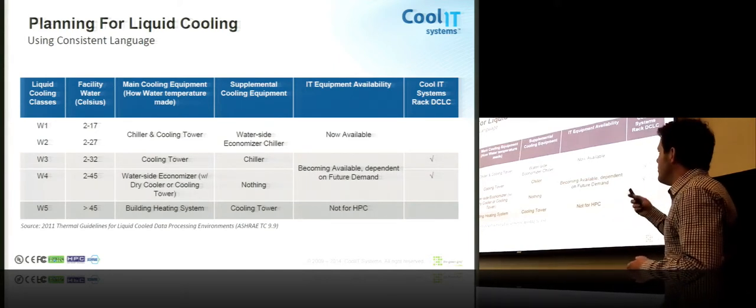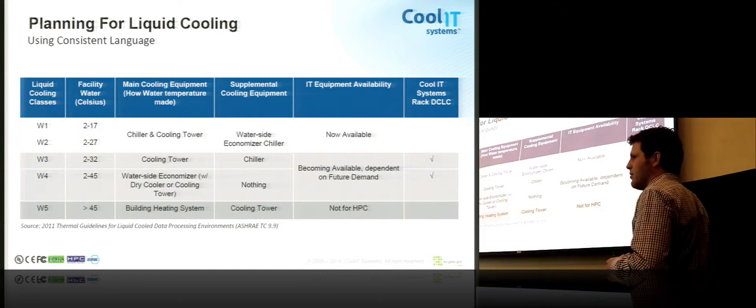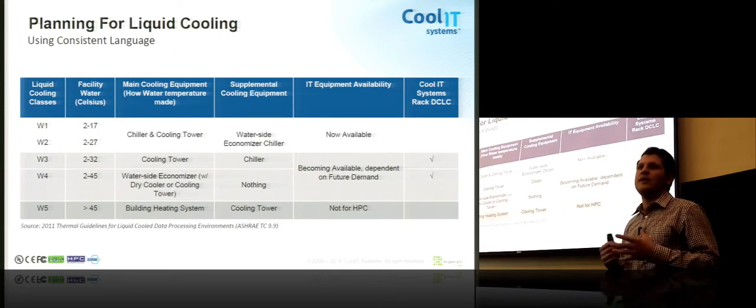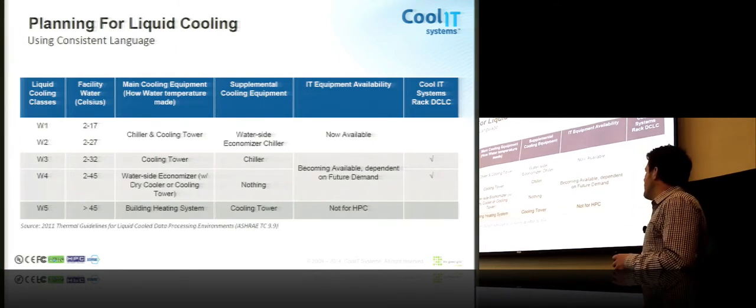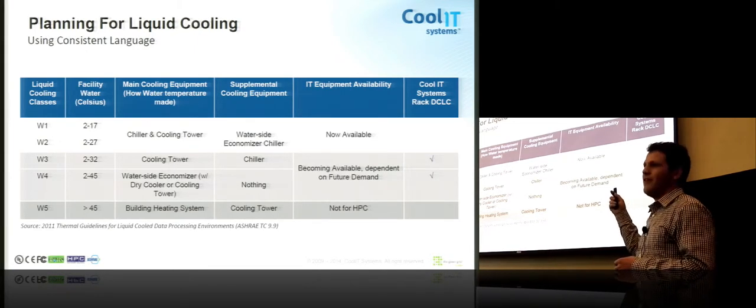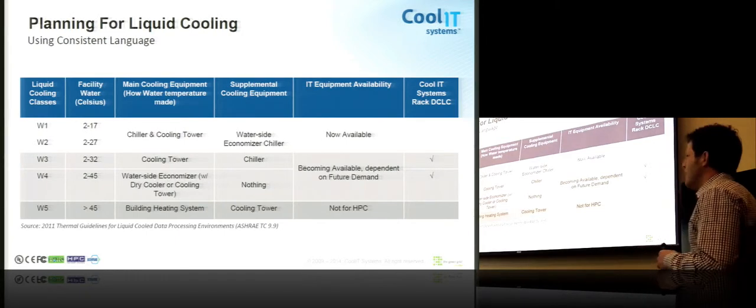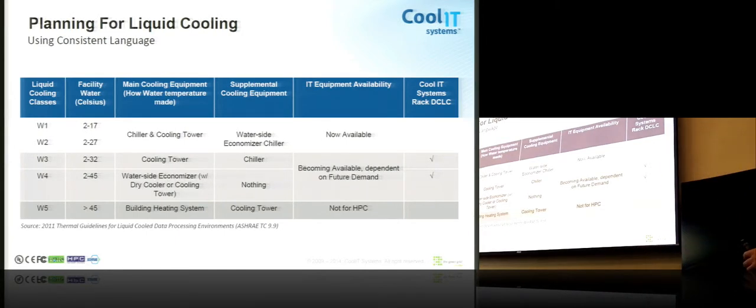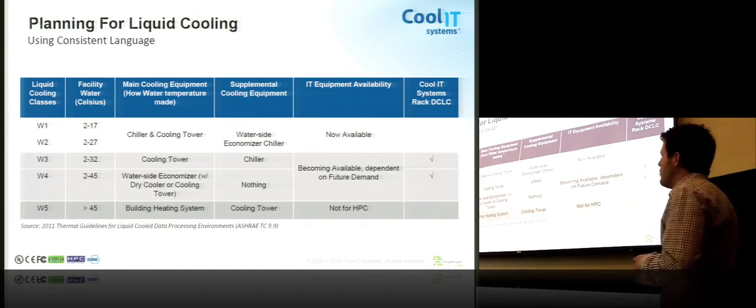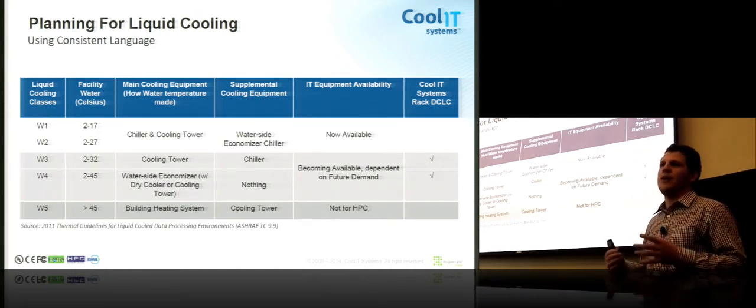More often though, W2 water is produced by a cooling tower with a chiller assist. W3, W4 water is where it really gets interesting and where we see quite a bit of savings for the data center. At W3 you can use a cooling tower almost, I'll say the entire year, very high percentage of the year. It's going to be 80% plus in most North American environments with some chiller assist. W4 we can use a dry cooler almost anywhere in the world year round.